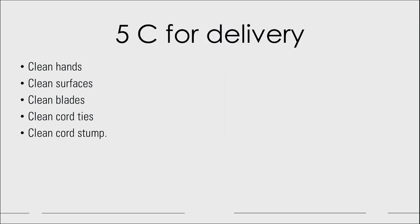What are the 5 C's for delivery? C indicates clean — that is clean hands, clean surfaces which includes clean perineum and clean cord care which includes clean blades, clean cord ties and clean cord stump. These are the 5 essential C's for conducting the delivery, or 5 cleans for delivery.